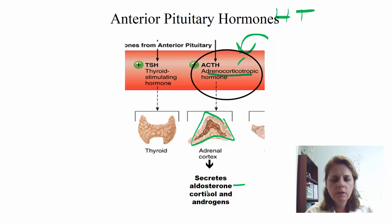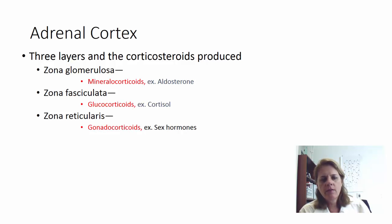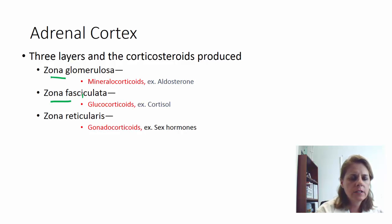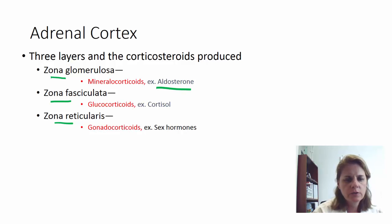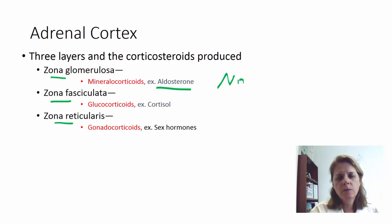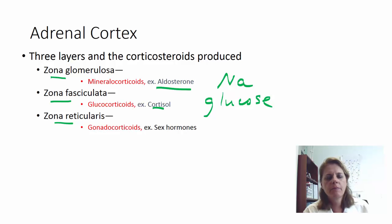The adrenal cortex has three layers called zones: the zona glomerulosa, the zona fasciculata, and the zona reticularis. The zona glomerulosa makes your mineralocorticoids — an example is aldosterone, which has something to do with sodium and minerals. The zona fasciculata produces glucocorticoids, with cortisol as the example, related to glucose metabolism. The zona reticularis makes gonadocorticoids, related to sex hormones.